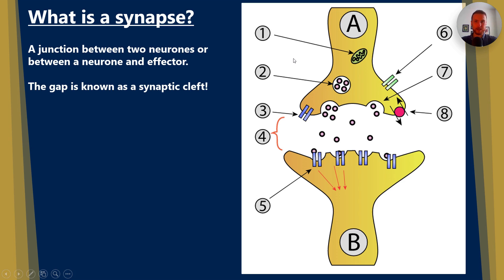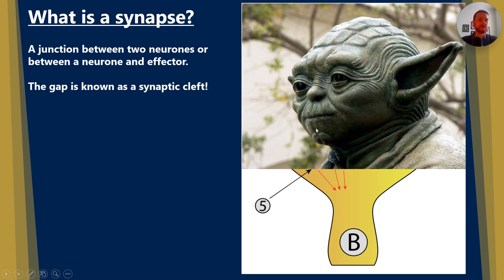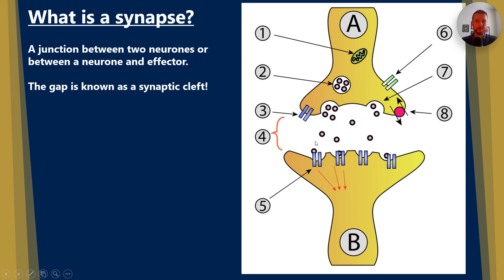So what is a synapse? It's a junction between two neurons, also known as a gap between two neurons. And this gap is known as the synaptic cleft. Now think of the synaptic cleft a little bit like a cleft chin. It's where there's a gap in the middle.